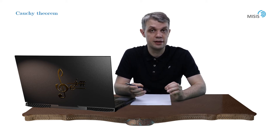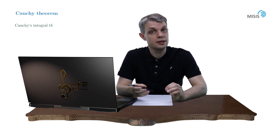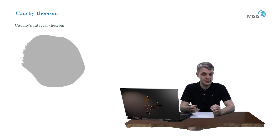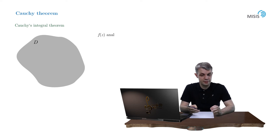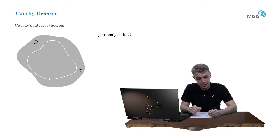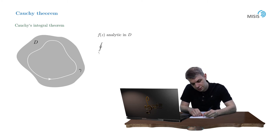It is cast in the form of the Cauchy integral theorem, and it goes as follows. Suppose we have some simply connected domain D and a function F analytic inside this domain, and suppose we have some closed contour gamma belonging to this domain. Then the integral along this closed contour always vanishes.